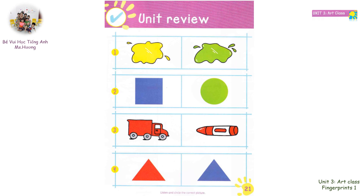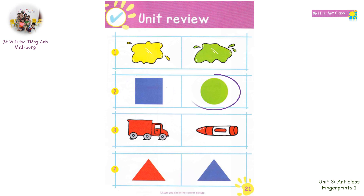Two: square. Blue square is a blue square. Circle, green circle, is a green circle.